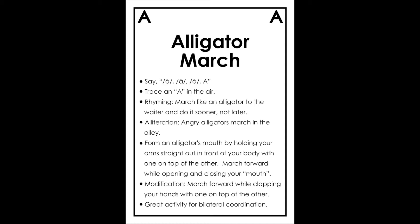Children that are learning the alphabet learn the sounds that represent the letter before they learn the letter. So for example, for the letter A, 'eh, eh, eh, eh' is the sound that is represented by the letter A.